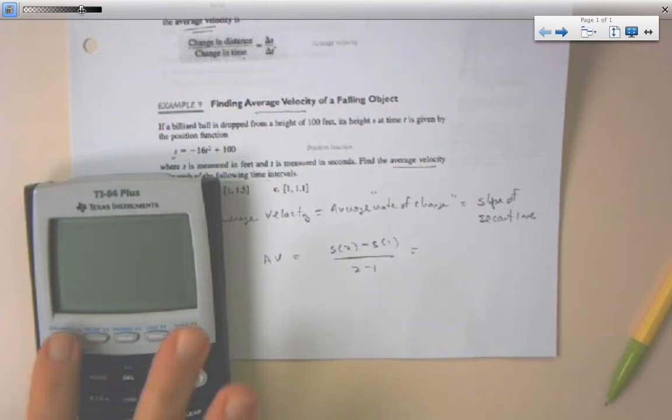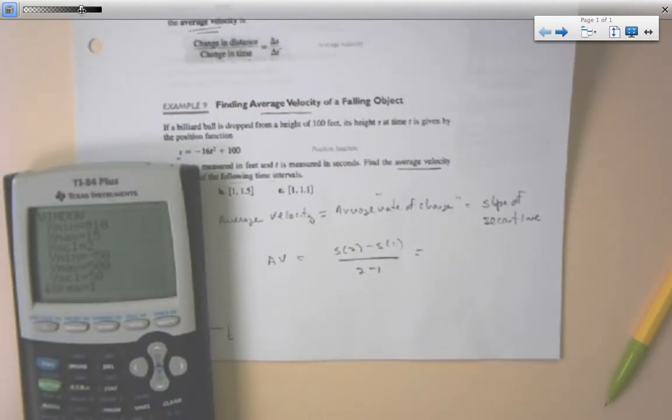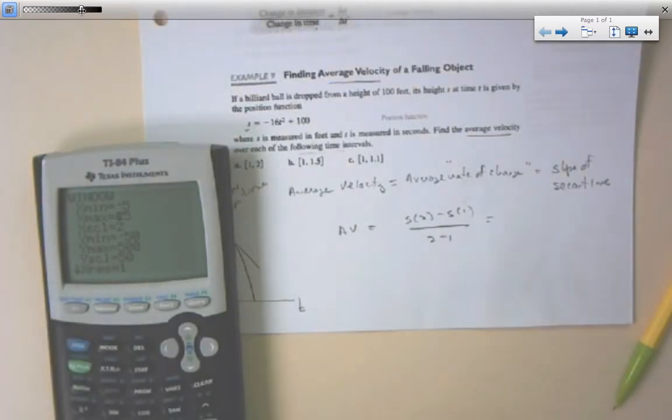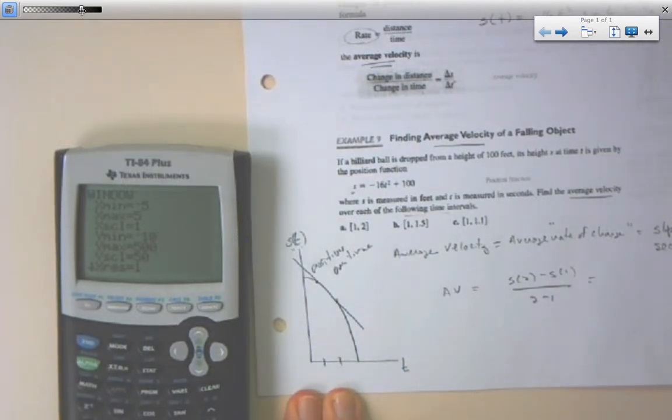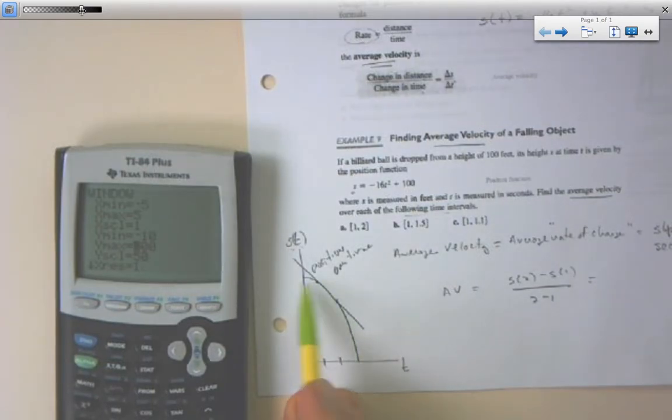This is a good place to practice using vars and yvars in your calculator. Get out your calculator and go to your y equals key. Clear out anything you have in there and type in your function. I need to adjust my window because it was set for a different problem. Let's put my x min at negative 5, my x max at 5, and my x scale at 1. My y min at negative 10, my y max at 110, and y scale at 20. Go ahead and graph this.